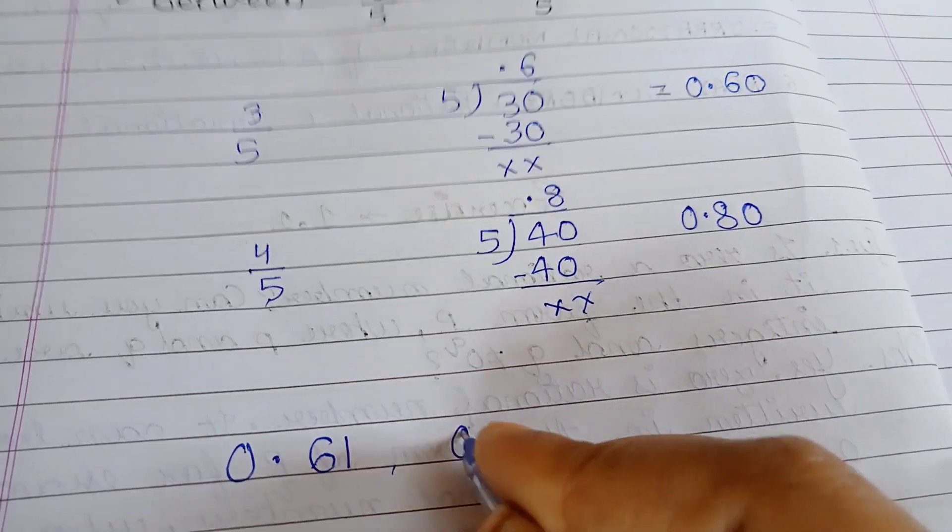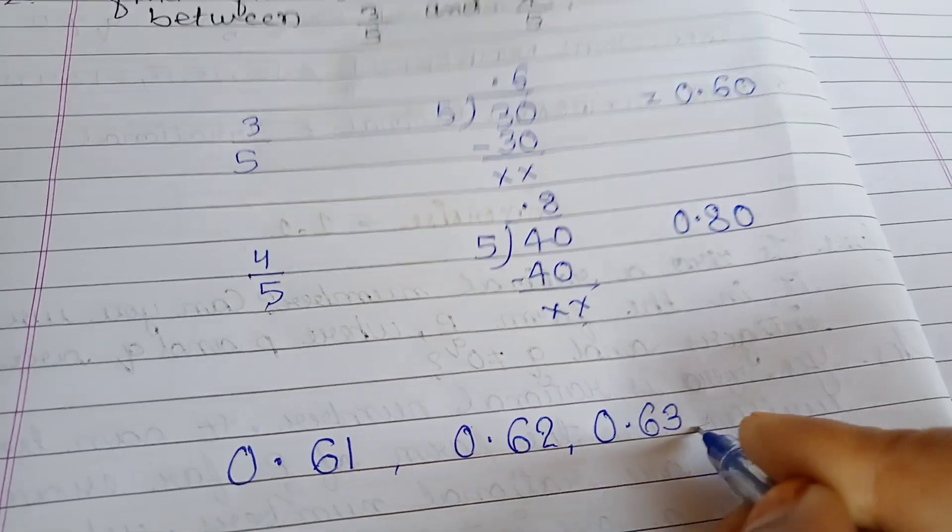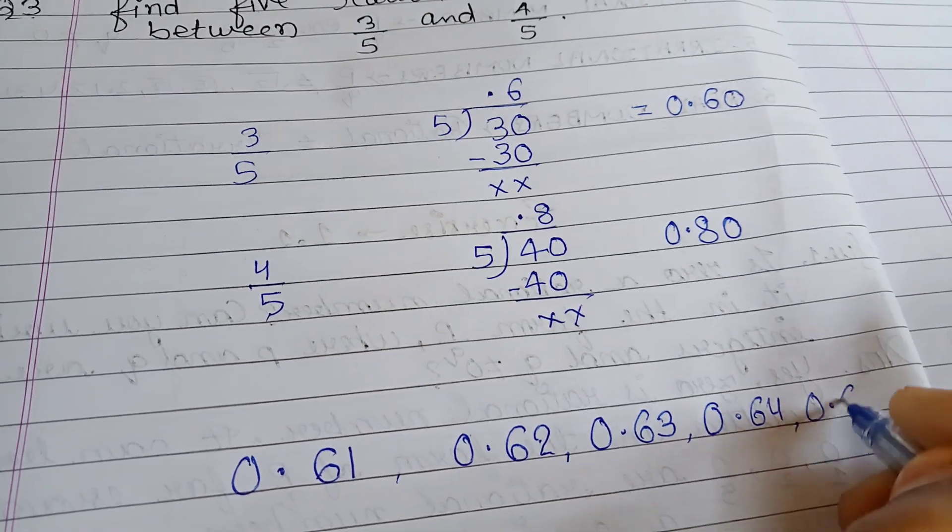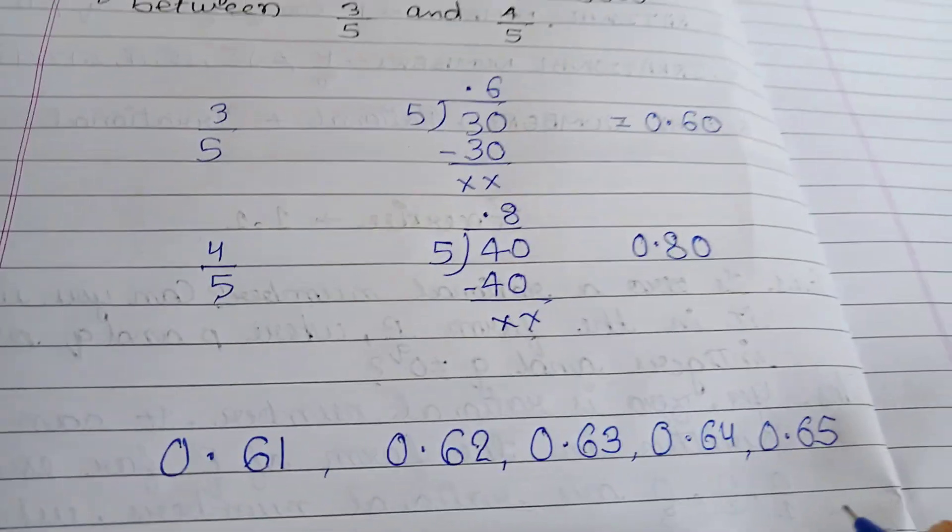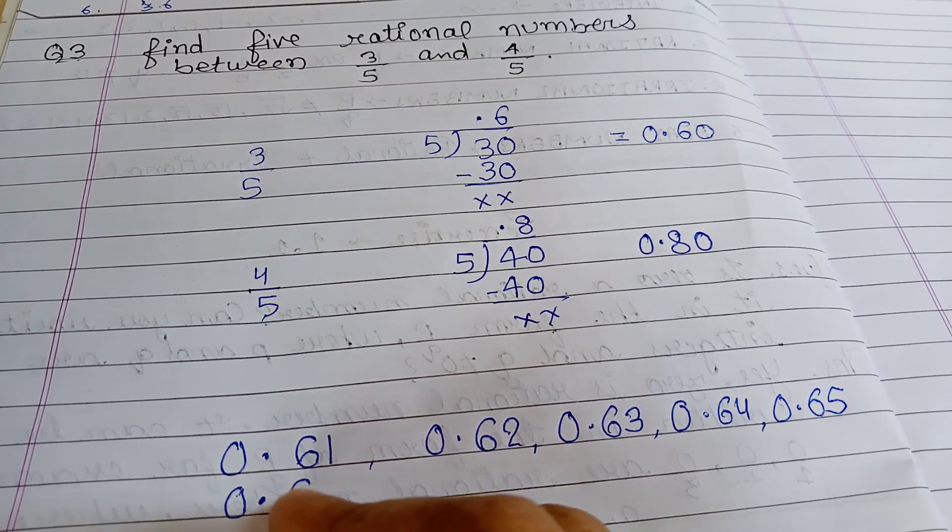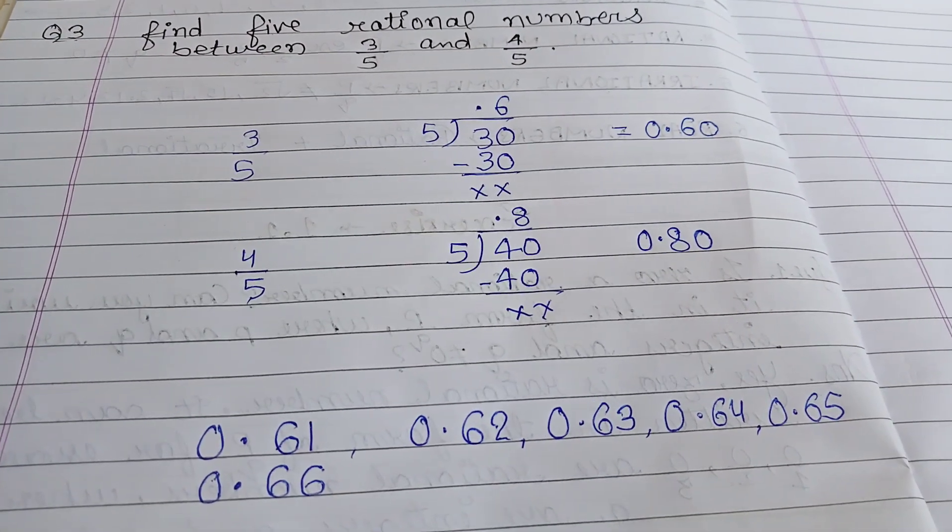If we have to find 5 rational numbers between 0.60 and 0.80, we can write numbers like 0.61, 0.62, 0.63, 0.64, and 0.65. In this way, you can find 5 rational numbers between 3 by 5 and 4 by 5.